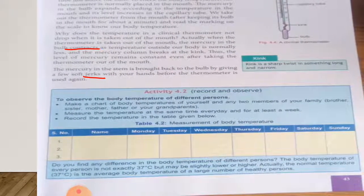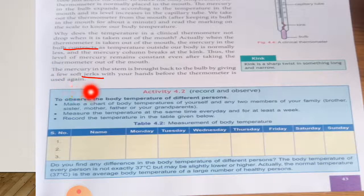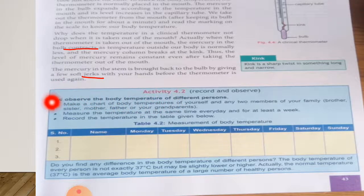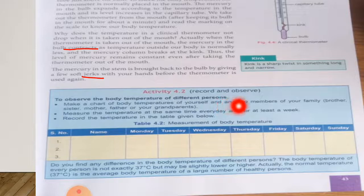Now Activity 4.2. The objective is to observe the body temperature of different persons. First, you have to make a chart of body temperature of yourself and two members of your family.